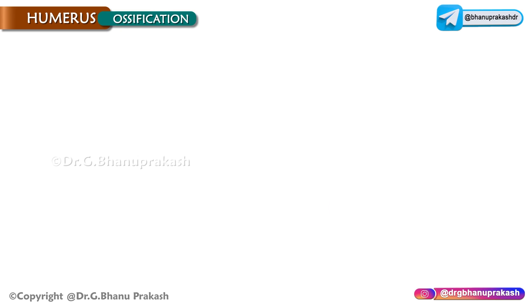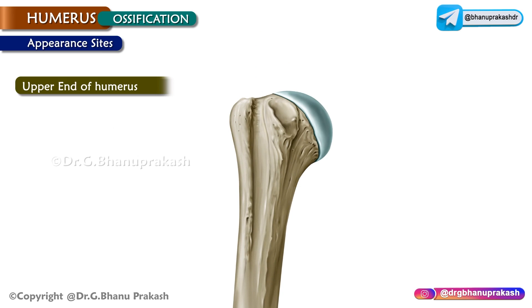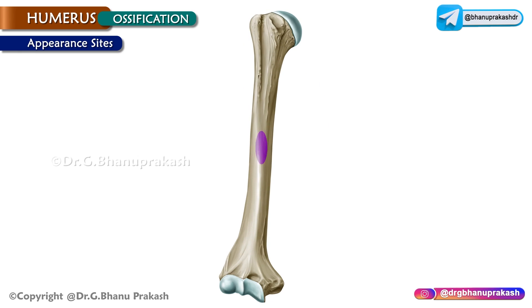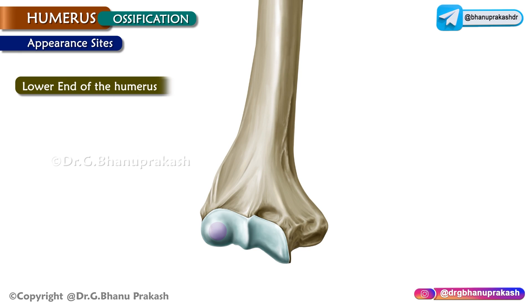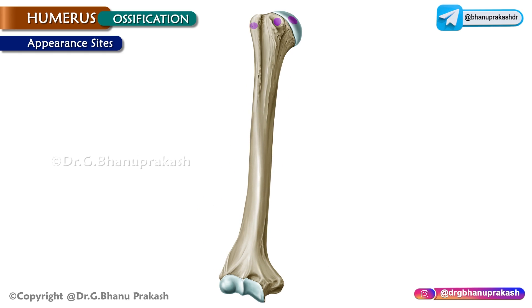Ossification: The humerus is ossified by one primary center for the shaft, three secondary centers for the upper end, and four secondary centers for the lower end. The ossification center for the shaft appears in the 8th week of intrauterine life. For the lower end: the center for the capitulum and lateral part of the trochlea appears in the 2nd year; medial part of the trochlea in the 10th year; lateral epicondyle in the 12th year; and medial epicondyle in the 6th year. All upper end centers fuse by the 7th year; all lower end centers fuse by 14 years.